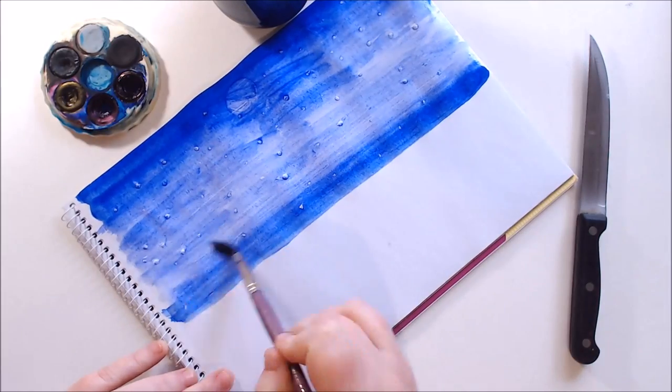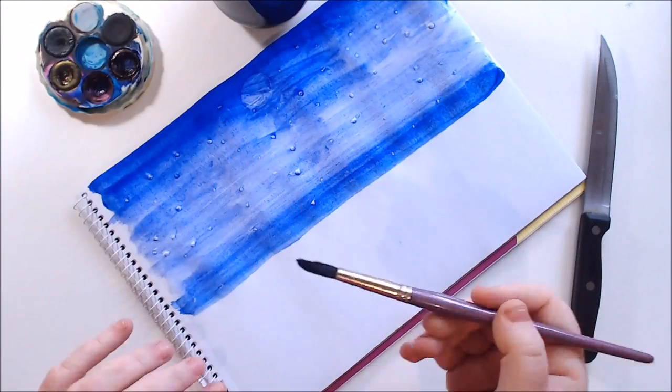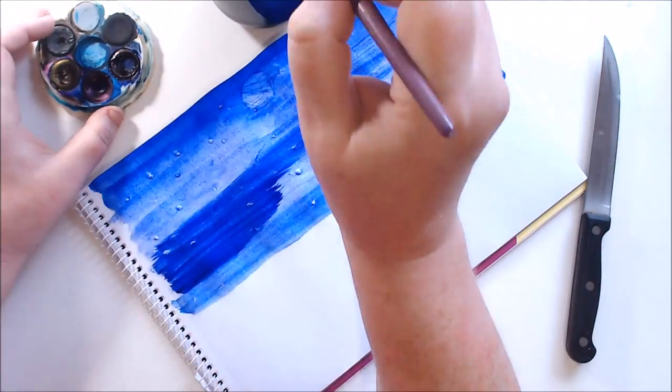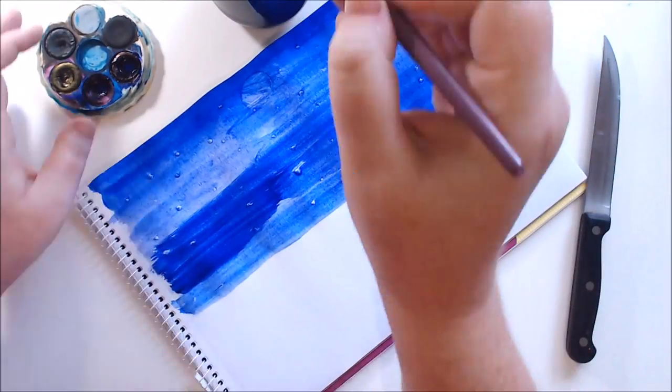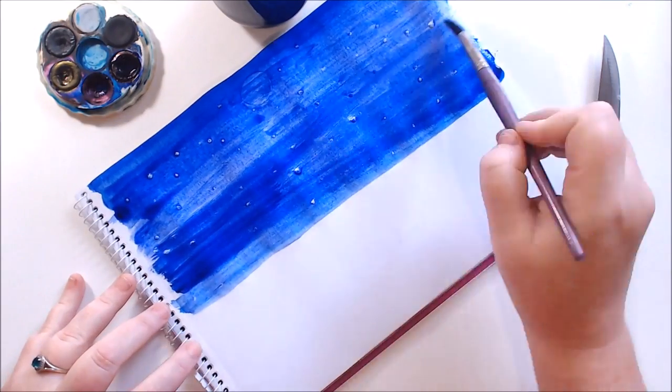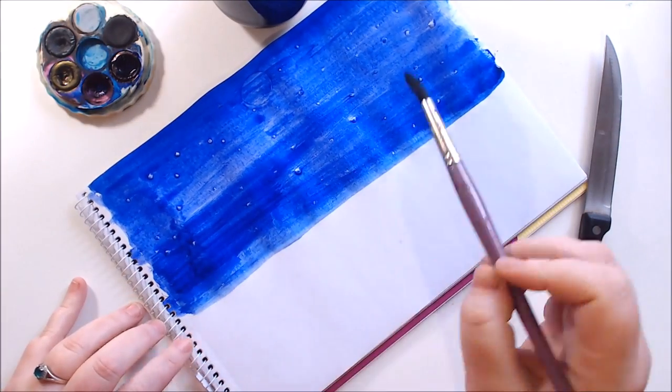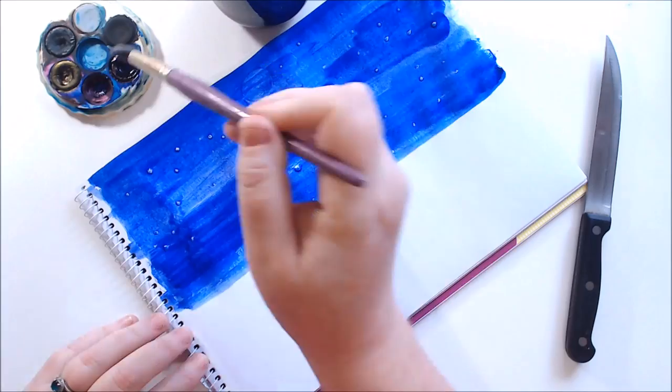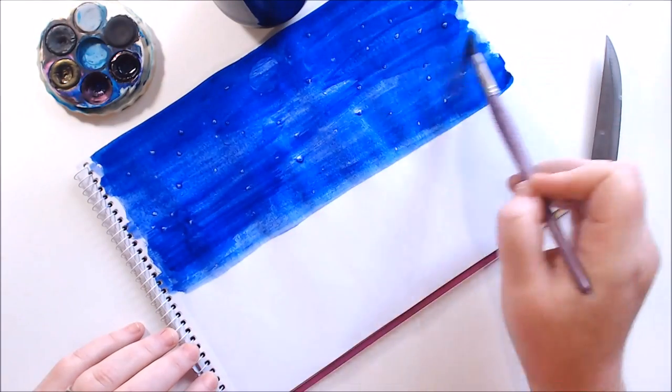And you might find you need to go back and forth over the dots just to make sure you cover them completely. Then you won't get any weird spots. And I'm just using some darker blue in some spots and some lighter, like watered down blue in other spots to make it look a bit more like a night sky.